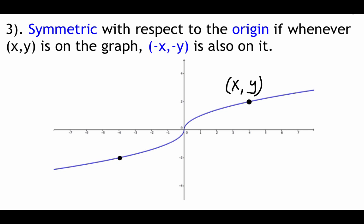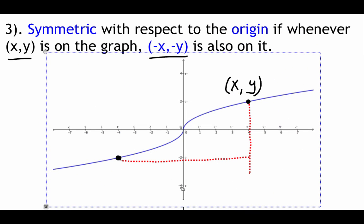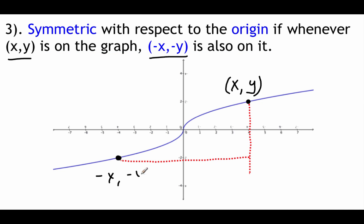The last type of symmetry is being symmetric with respect to the origin. If we have (x, y) on the graph, then we also have to have (-x, -y). There are two ways to think about this: one is a combination of x-axis and y-axis symmetry — flip down over the x-axis and then flip left across the y-axis. The way I personally like to think about it is a 180-degree rotation.